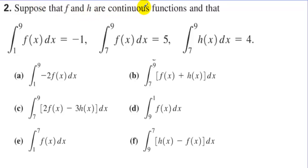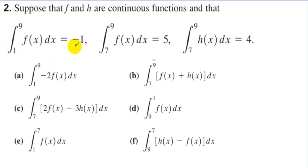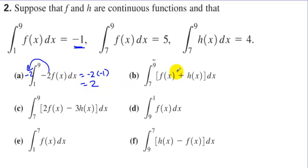Suppose f and h are continuous functions with: the integral from 1 to 9 of f(x) is negative 1, the integral from 7 to 9 of f(x) is 5, and from 7 to 9 of h(x) is 4. Part A: integral from 1 to 9 of negative 2 times f(x). We know the integral from 1 to 9 of f(x) is negative 1, so this equals negative 2 times negative 1 — the answer is 2.